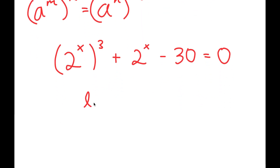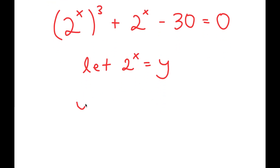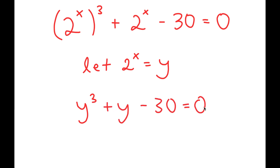And I have this plus 2 to the power of x minus 30 is equal to 0. Now I'm going to let 2 to the power of x equal to the variable y. So I get y to the power of 3 plus y minus 30 is equal to 0.